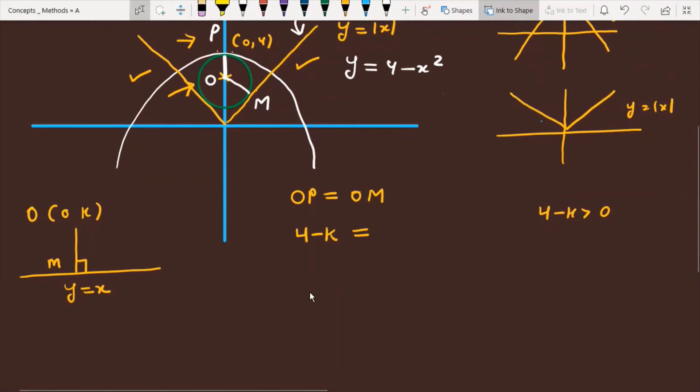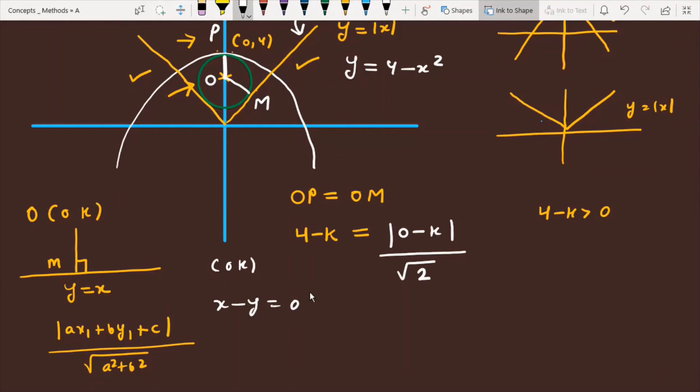So I am using the formula here. I hope you know that from a given point, if you plot a perpendicular line, then the formula is ax1 plus by1 plus c divided by under root a square plus b square. And if I apply this formula here, you can see on the right-hand side, point (0, k) and line is x minus y equals 0, and the point is (0, k). Let's start.